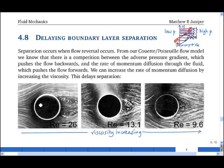Here we see the flow around a cylinder at a Reynolds number of 26, a Reynolds number of 13.1, and a Reynolds number of 9.6. If the free stream velocity is the same and the diameter of the cylinder is the same, then this corresponds to an increase in viscosity.